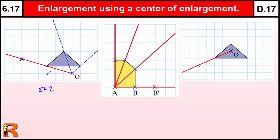So this corner is 3 squares across, 1 square up. If we double that — 3 squares across, 1 square up — this corner is going to move to here. Similarly this one is just one diagonal across: 1 across, 1 up. If we double that distance from the centre of enlargement, that's where the other corner goes. And this corner here is 1 across and 3 up — we do that again, 1 across, 3 up — so it moves to here.